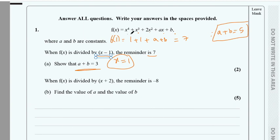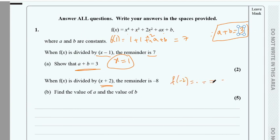We have 1 plus 1 plus 2 which gives 3. When you divide by (x + 2), x is minus 2, so you find f(minus 2) and equate that to minus 8 because the remainder is minus 8. This gives you a second equation.